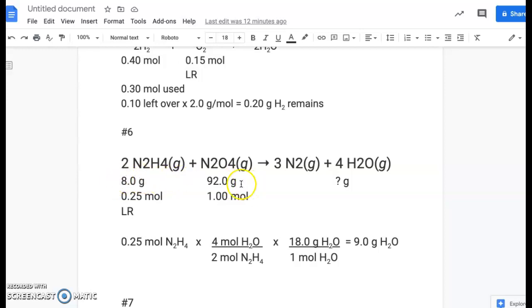Now they're giving you amounts that are relatively easy to work with. You can just do the mental math. The molar mass of this was 32, so 8 divided by 32, that's a fourth or 0.25. And N2O4 has a molar mass of 92, so just 92 divided by 92 gives you 1 mole. Now according to the mole ratio, if you have 1 mole of this N2O4, you would need 2 moles of this N2H4. That means that this is your limiting reactant.